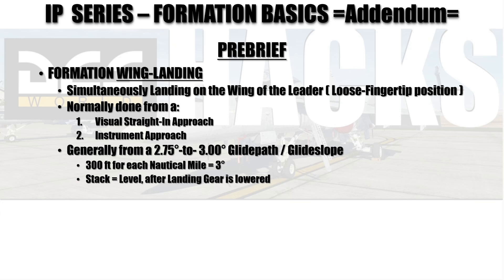This is normally done from a visual straight-in approach, typically around 5 miles, or an instrument approach, which is also typically about 5 miles. Generally it's done from roughly a 2.75 to 3 degree glide path or glide slope. Once you have the landing gear lowered, the wingman will maneuver to what's called a stack level position, putting the leader's head on the horizon so that both aircraft are essentially at the same altitude.